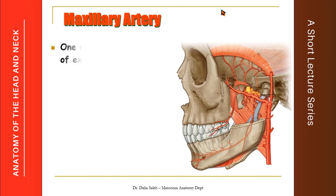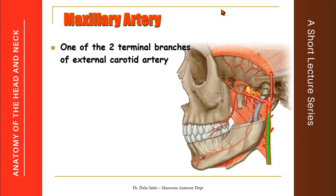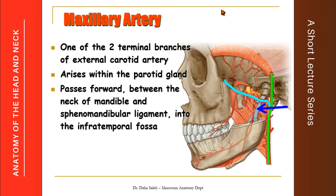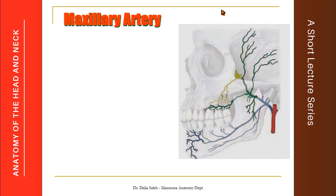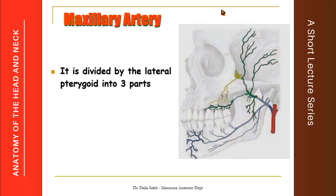Let's start with the maxillary artery. It is one of the two terminal branches of the external carotid artery. It arises while the external carotid artery lies within the parotid gland. It passes forward between the mandible and the sphenomandibular ligament into the infratemporal fossa, and then enters the pterygopalatine fossa through the pterygomaxillary fissure.